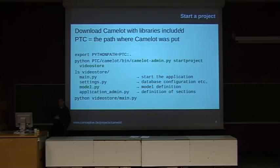I will demonstrate how to start a project in Camelot by building a movie database in 15 minutes. First, download the Camelot framework including all its dependencies and set your path correctly. You can use the Camelot admin tool to start a new project. The admin tool creates the main file to launch the application, the settings file containing database configuration and image locations, the model file containing the Elixir object model and visualization definitions, and the application admin file defining how your application should look.